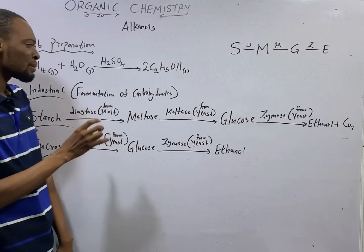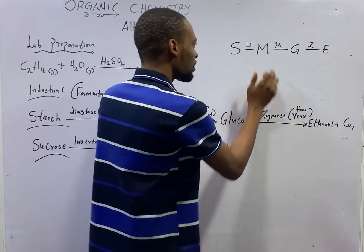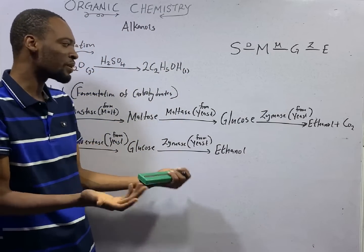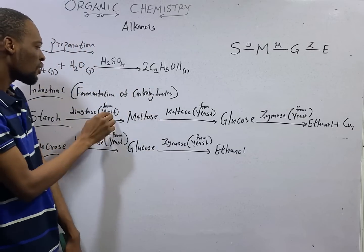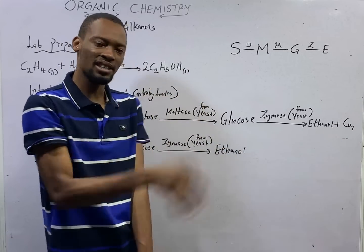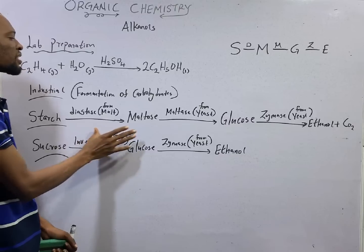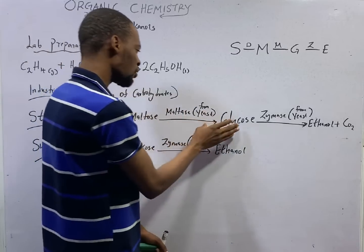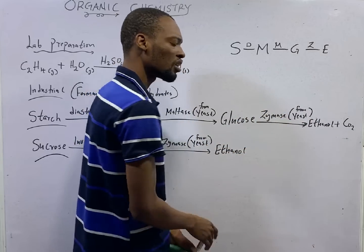The enzymes involved are diastase, maltase and zymase, D-N-Z. Enzymes are organic catalysts. When catalysts are from natural source, we call that enzyme. The sources of the enzymes are malt, yeast, and yeast. Just know that the first one is malt. The other ones are yeast. Diastase acts on starch and converts it to maltose. Then, maltase acts on maltose to convert it to glucose. Glucose, zymase acts on glucose to convert it to ethanol and water.